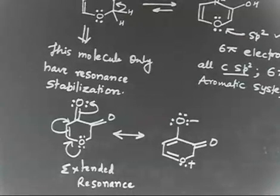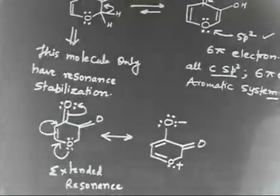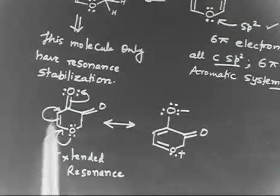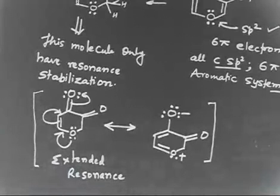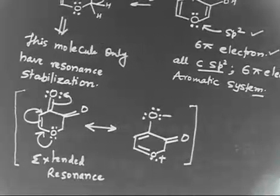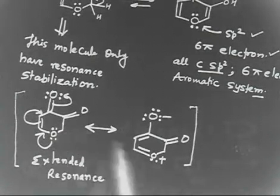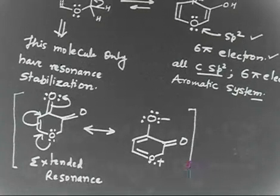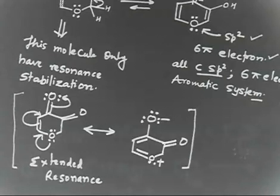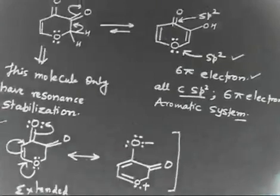This is the driving force for this side - extended resonance. But if you see the keto side, these are two resonating structures that stabilize the keto form. But in enol form, the compound becomes aromatic. The stabilization due to aromaticity is much larger than the stabilization due to resonance. Aromaticity wins over extended delocalization, and that's why enol form is major. The reason is aromaticity.